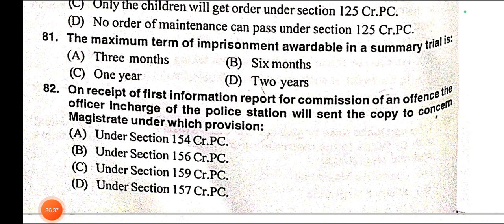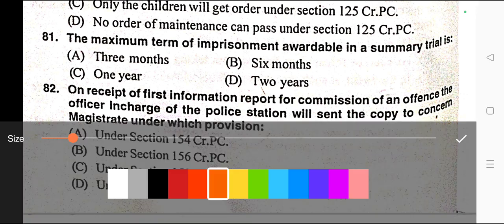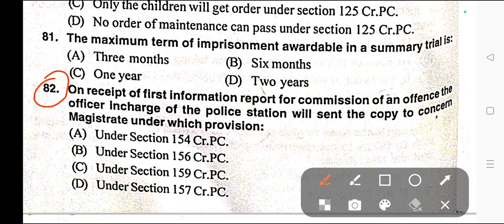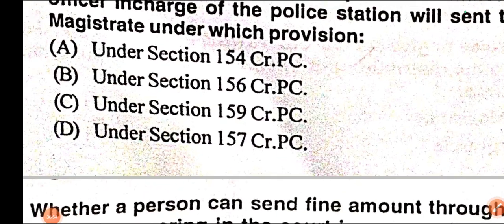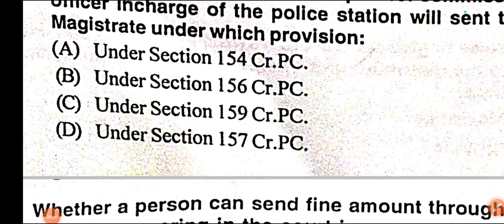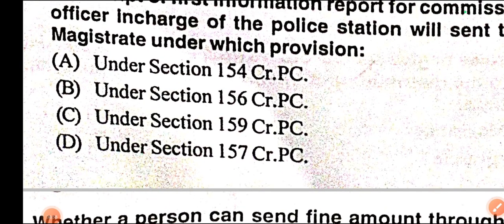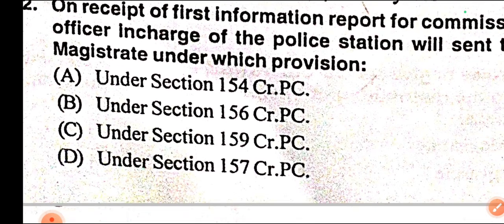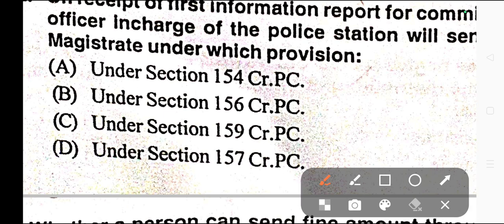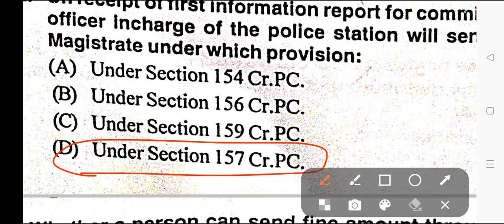Question number eighty-two: On receipt of a First Information Report for commission of an offence, the officer in charge of the police station will send the copy to the concerned magistrate under which provision? Options: A) Under Section 154 CrPC, B) Under Section 156 CrPC, C) Under Section 159 CrPC, D) Under Section 157 CrPC. Correct answer is option D — under Section 157 of CrPC. Section 157 CrPC casts a duty upon the investigation officer to send the report of the cognizable offence to the concerned magistrate.